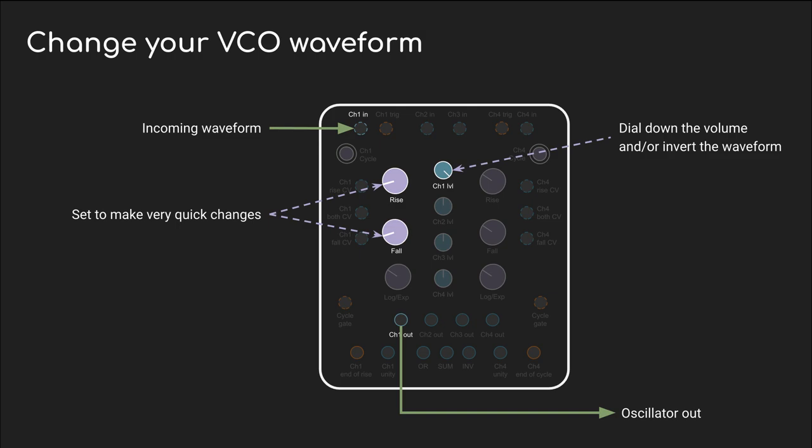Now we get into something really interesting, which is to use slew to change the character of an oscillator. It's easy to forget that slew works at audio rates as well. If it can turn a clock into a triangle LFO, can it turn a square wave from an oscillator into a triangle wave? Turns out that it can. The diagram is super simple — the only real difference is that you're going to need to set the rise and fall knobs all the way down, because you need the changes to be really fast since this is audio rate. You can also use the unity output and ignore the attenuverter.